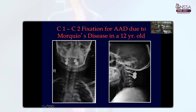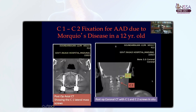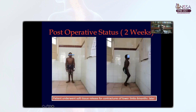We did a bilateral C1-C2 fusion using screws and rods. The post-op images show the screws and rods in C2 after Goel's fusion. The post-op coronal and axial CT shows both the C1 and C2 screws in situ. That's the patient two weeks post-op. Please note these children have significant skeletal dysplasia, contracture of the lower extremities, and so on. These children will require several orthopedic procedures later.